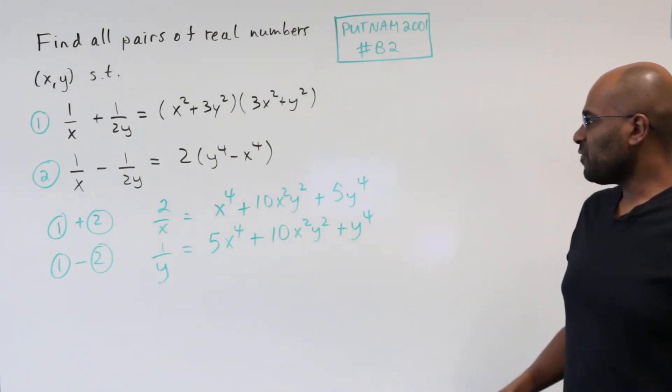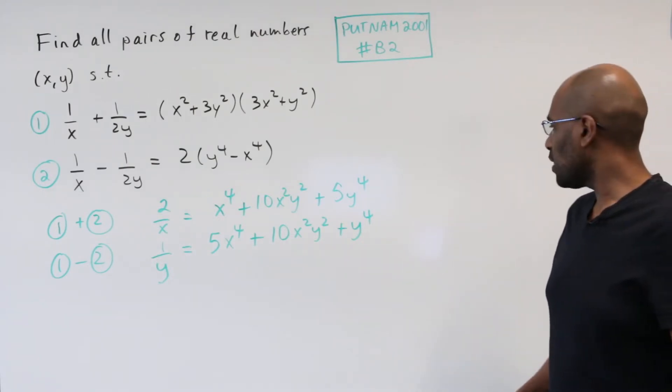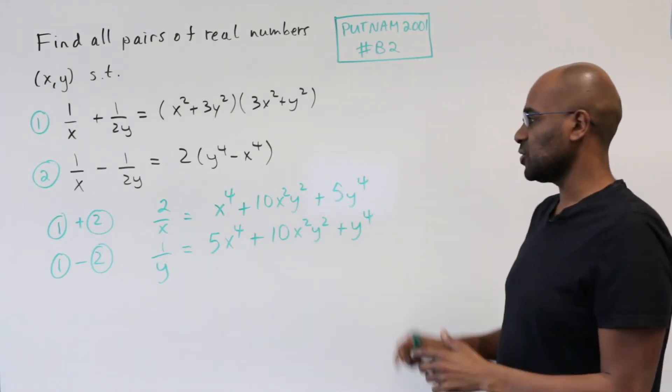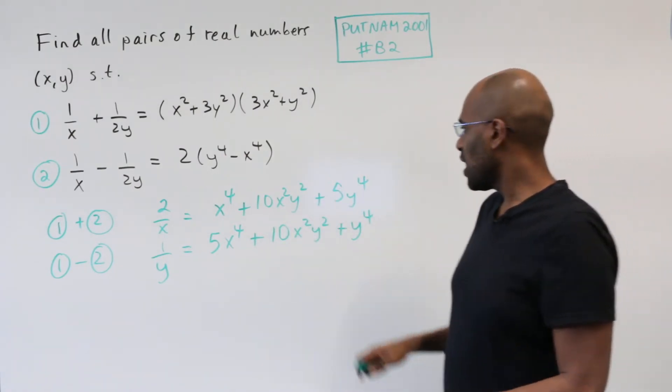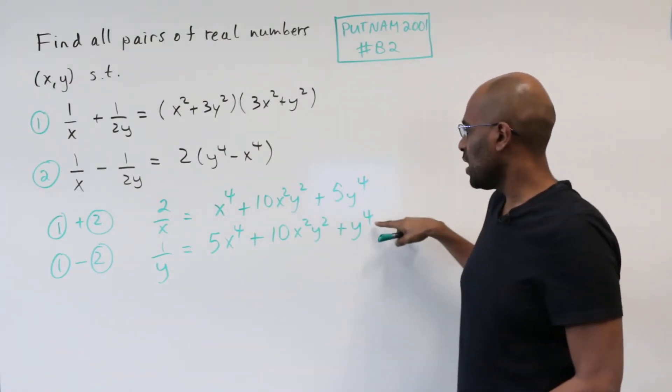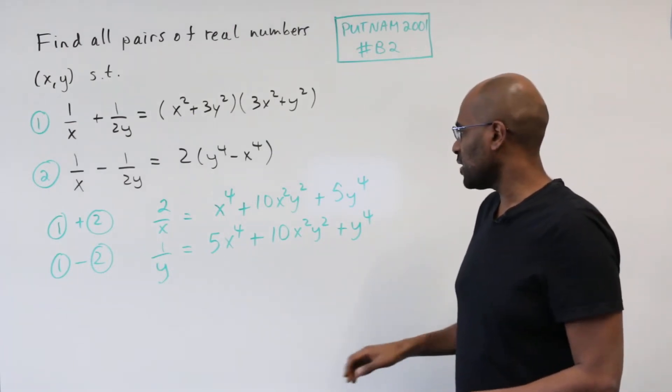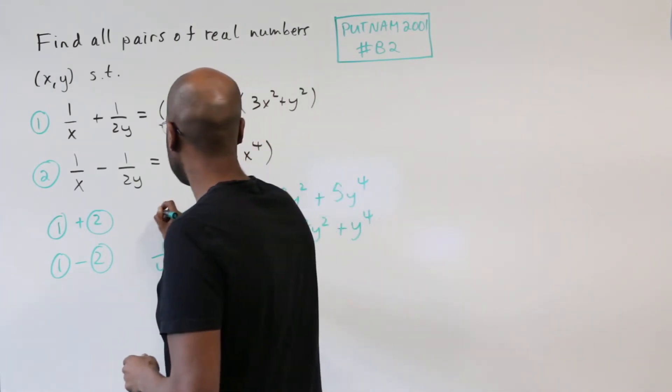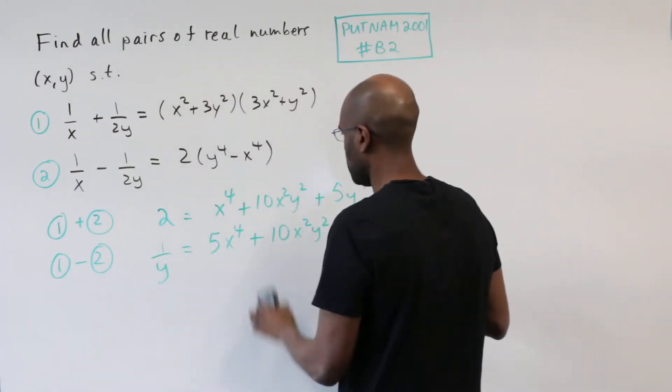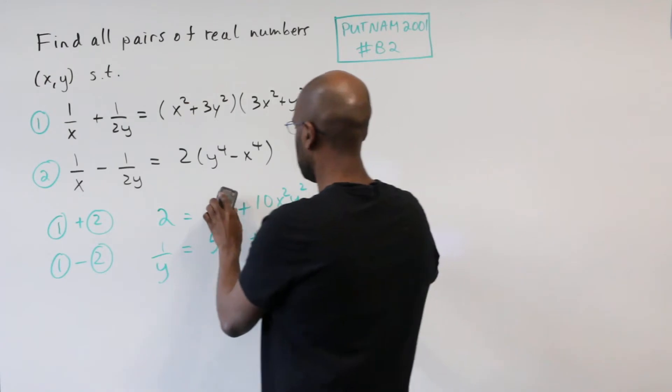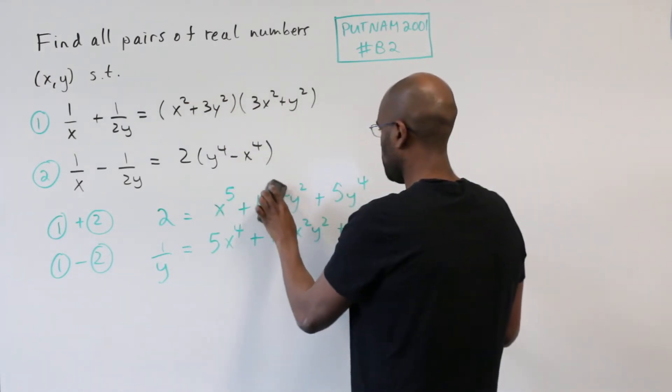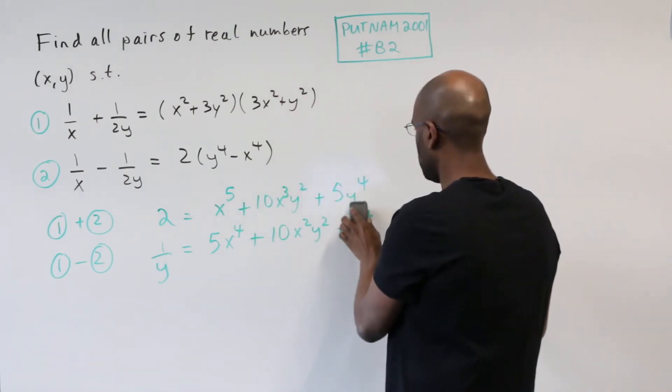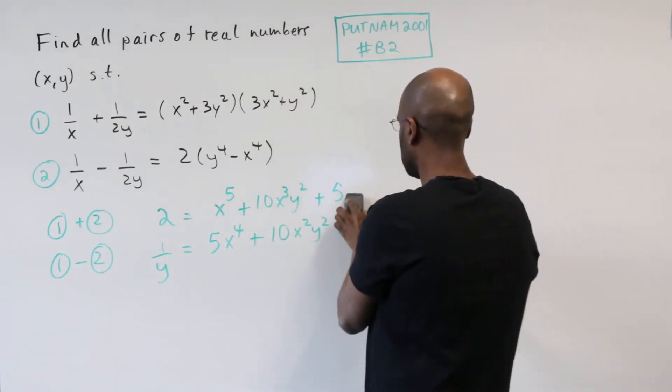And we might as well simplify things here a little bit more as well. We have these denominators with variables x and y. Why not turn this into two polynomial equations by multiplying this one by x and this one by y respectively. If we multiply this by x we have a 2 here and then we'll increase the exponent of x everywhere we see it on the right hand side. So this becomes a 5. This x here becomes a 3 instead of a 2. And then here we introduce an x term so we get x y to the fourth.